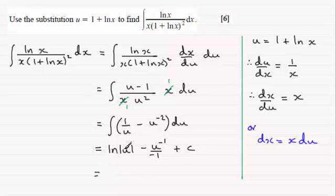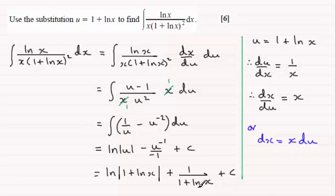Now all we need to do is substitute back for u. So we've got here the natural log of the natural log of u, which is 1 plus the natural log of x. And then for this term, this is plus u to the minus 1, or plus 1 over u. So we've got here plus 1 over, and then we've got 1 plus the natural log of x, and then we've got the constant of integration plus c.